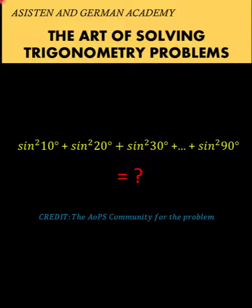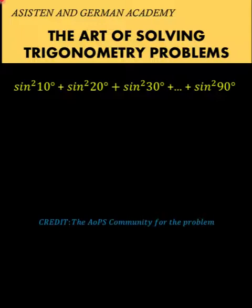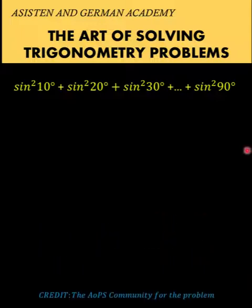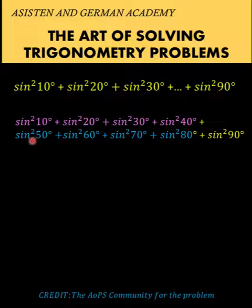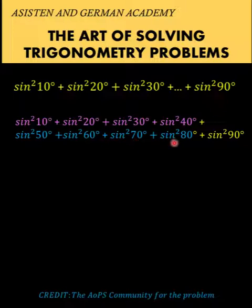Now let's solve this problem together. Let's begin by listing down all the terms that are missing. After sine squared of 30 degrees, we have sine squared of 40 degrees, sine squared of 50 degrees, sine squared of 60 degrees, sine squared of 70 degrees, sine squared of 80 degrees, up to sine squared of 90 degrees.